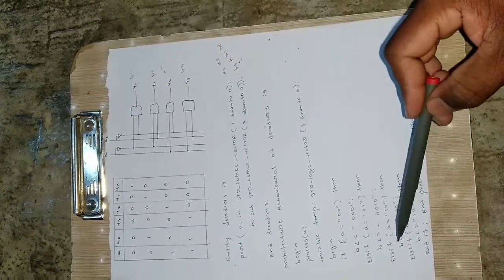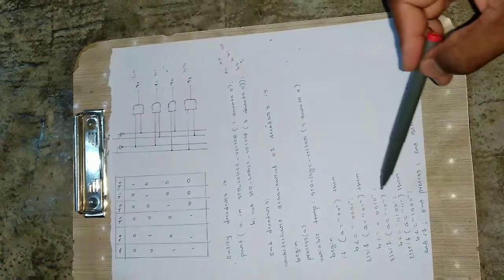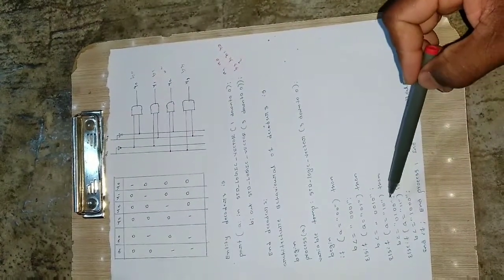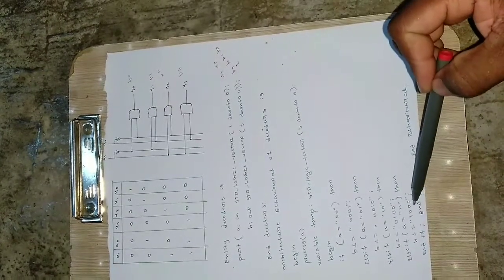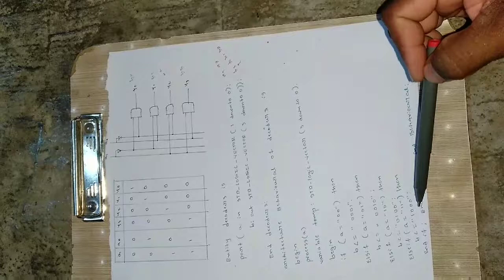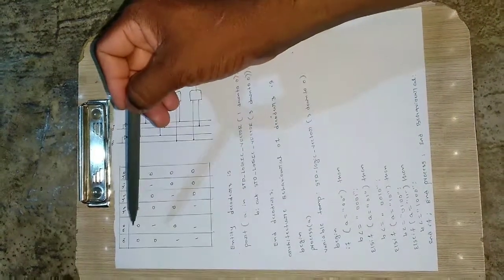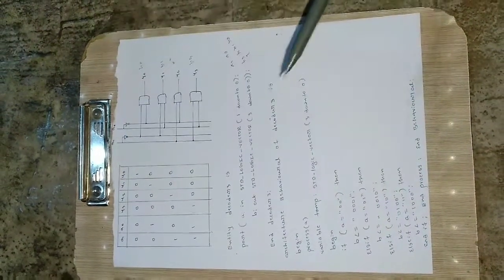And if a is equal to 1 0, that is this condition, then b is assigned with 0 1 0 0. Else if a is equal to 1 1, b is assigned with 1 0 0 0. So we are just taking this as the a values and assigning it to the b values.